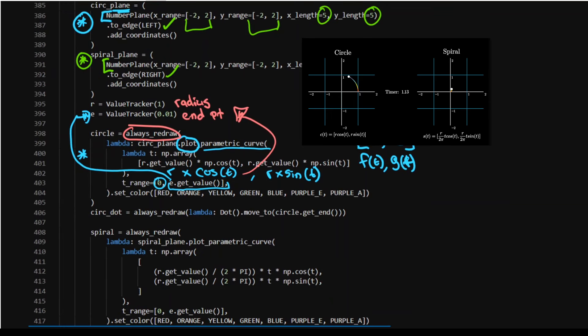Then I've got a dot for my circle, which I just move to get end. Again, we are always redrawing that because it's just always updating.